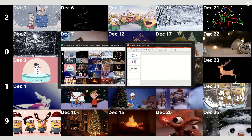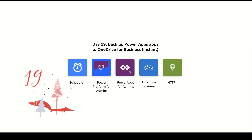We're going to start by looking at our connectors. Today we have several, starting with Schedule, so we'll be scheduling this flow — it could be daily, weekly, or monthly. We're going to use the Power Platform for Admins connector, so you do need to be either an environment or a tenant admin. We'll also use the Power Apps for Admins connector and the OneDrive for Business connector. The only thing to remember is that HTTP may be a premium connector, and you'll see all the flags for premium whenever it applies.